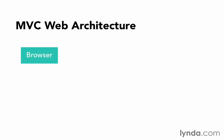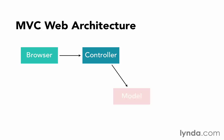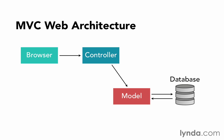The browser communicates to the controller, which contains only the code involved in making decisions about what should happen based on that browser request. Then if we need to interact with the database, the controller will talk to our model. Our model will put all the code related to our data and to connecting to the database, and then the model will return its results back to the controller. The controller can go back to the model if it needs, and the model can go back to the database, and so on.